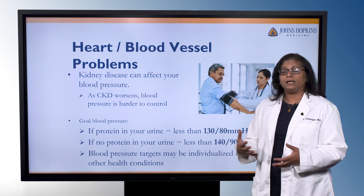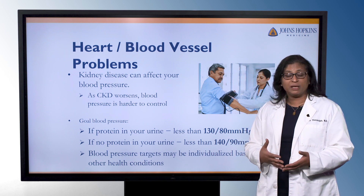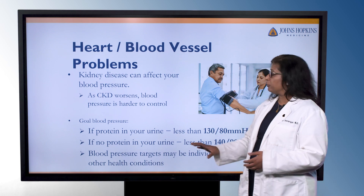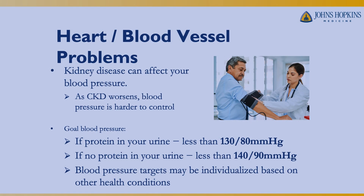There are a lot of different guidelines for blood pressure targets depending on other health issues. Focusing on kidney issues: if you don't have any protein or albumin in the urine, the goal blood pressure is less than 140 over 90. If you do have protein in the urine, we try to lower that blood pressure down below 130 over 80. Blood pressure targets will be adjusted depending on your other health conditions, so it's a discussion you'll have with your healthcare team.